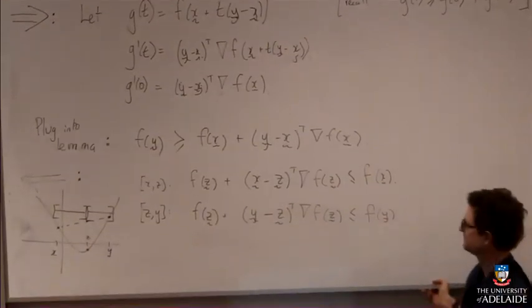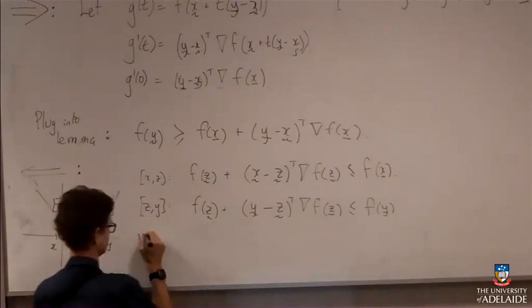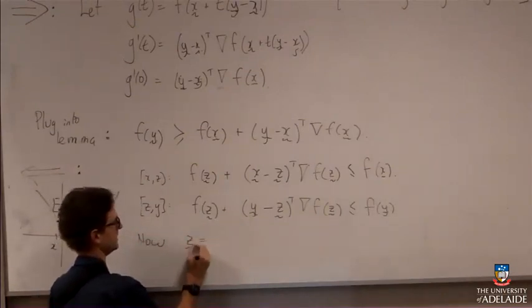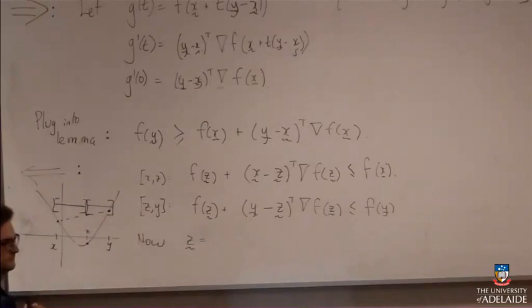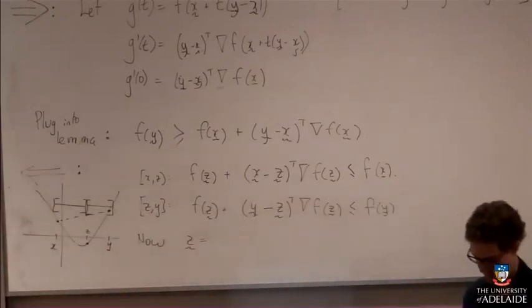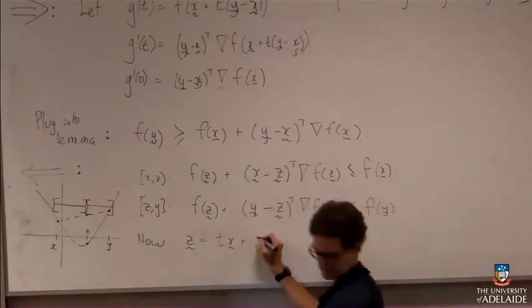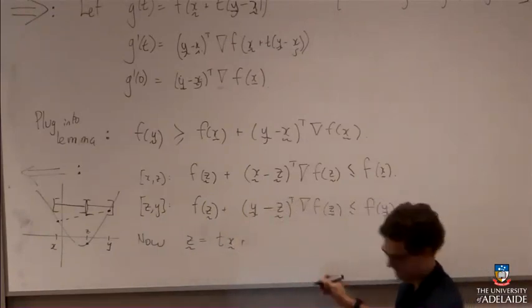Okay, so that's writing down something that looks very similar twice. And now the whole point of z is that z interpolates between x and y. So z gives me all the points that lie between x and y. So z is t times x plus 1 minus t times y.